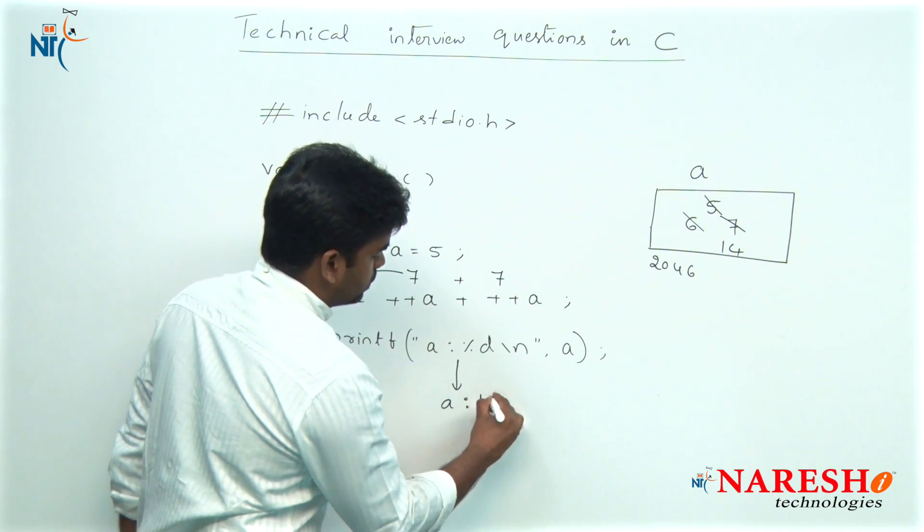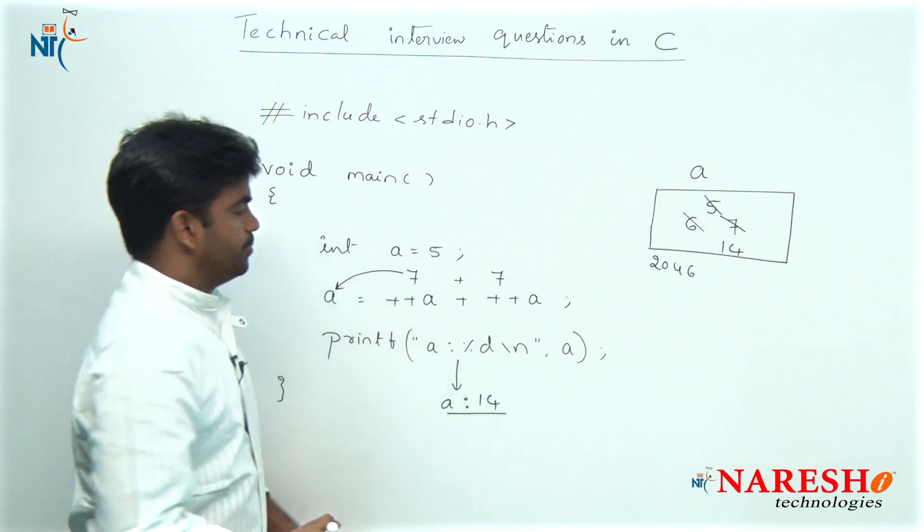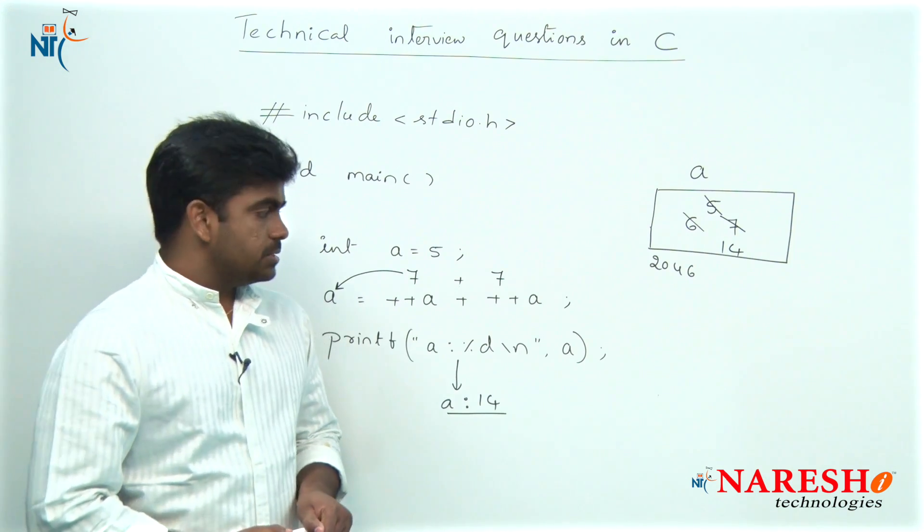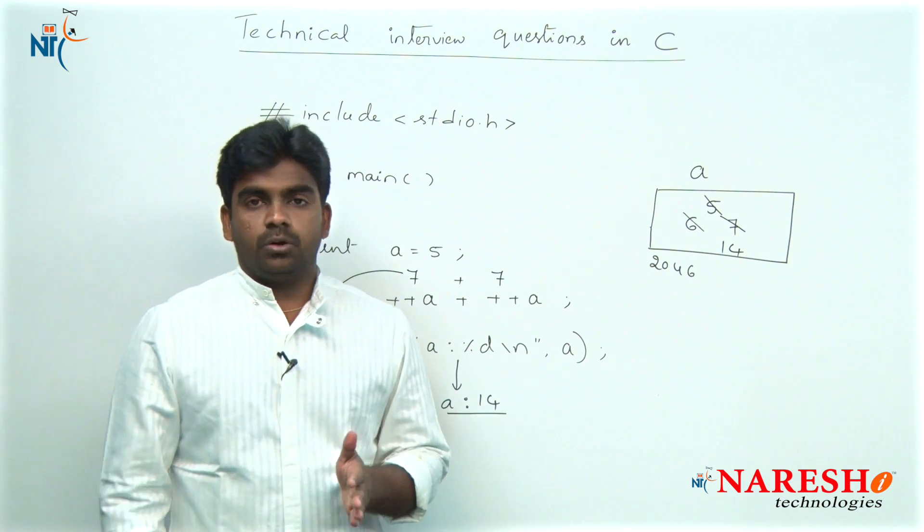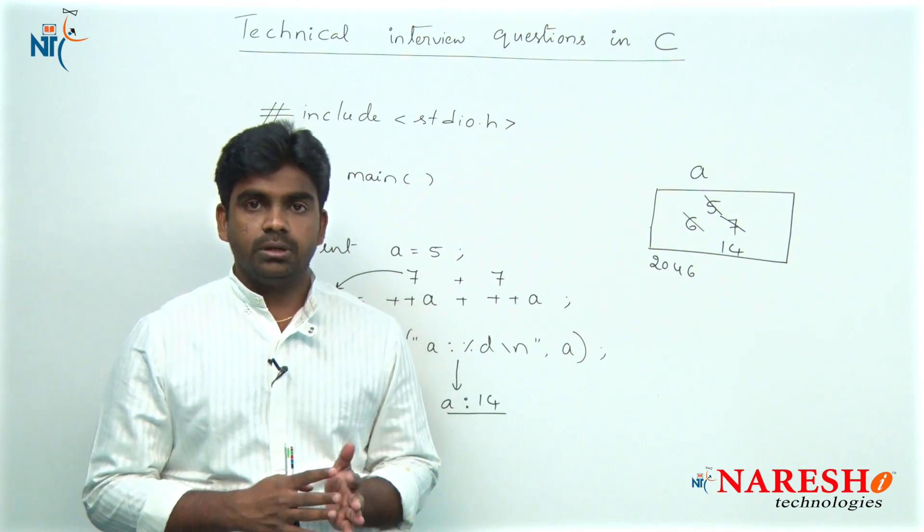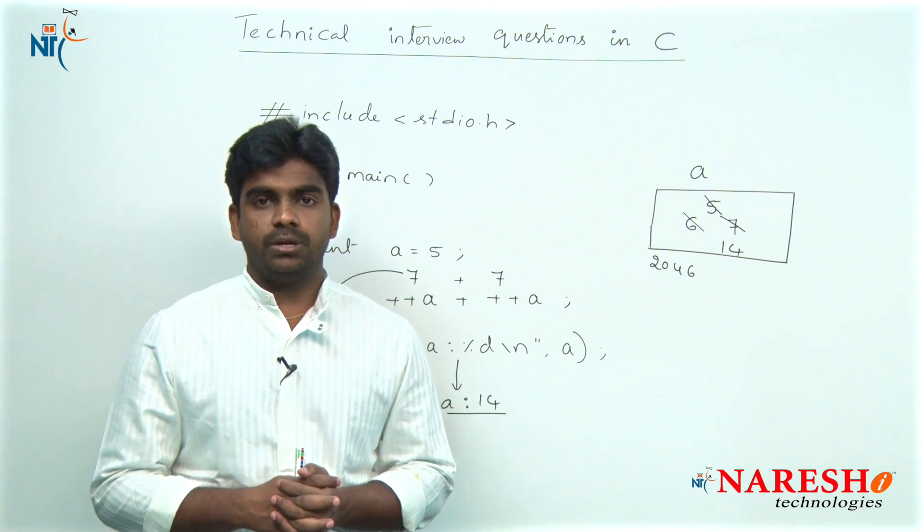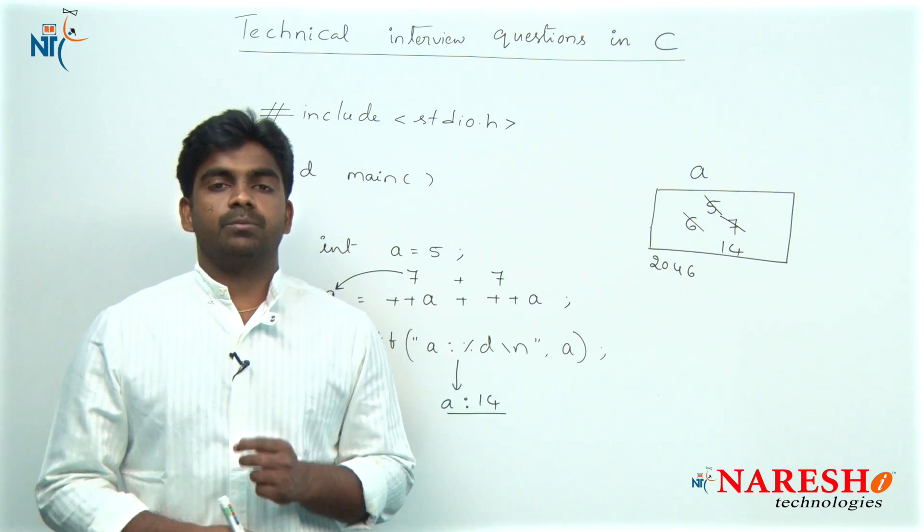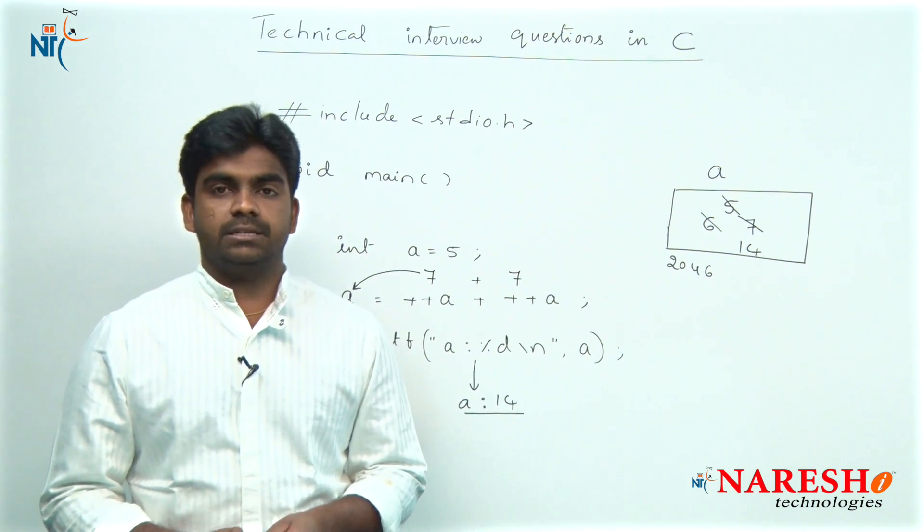Here it will print that output is a value is 14. This is the output and this is how the pre-increment operators execute in the expression. Hope you understood. For more videos please subscribe to Naresh IT channel. Thank you.